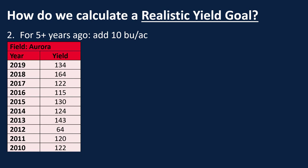Step two is we're going to identify those sites that are five or more years past the present — shown here in blue — and we're going to add ten bushels per acre to those sites. We do that because we are commonly increasing our yields about two bushels per acre per year. So once we hit five years back, we need to increase those previous bushels per acre by ten to get closer to what our five-year average is, while still having that long-term data to support our realistic yield goal.